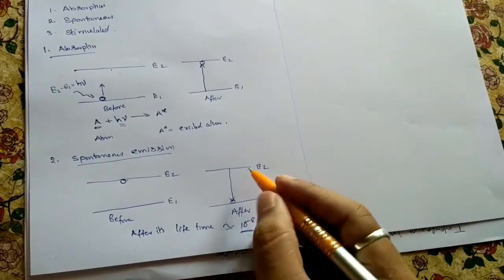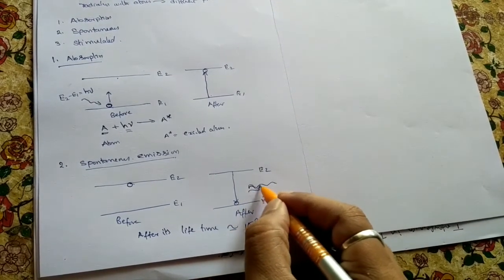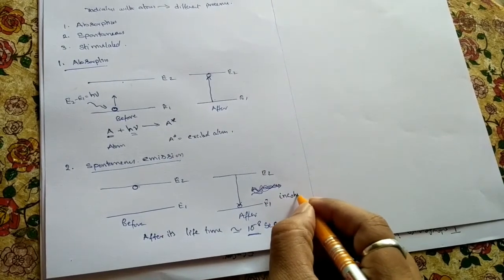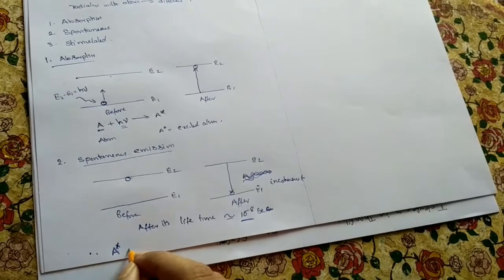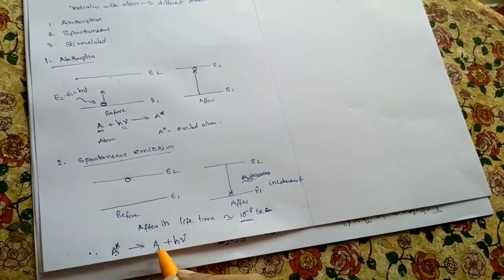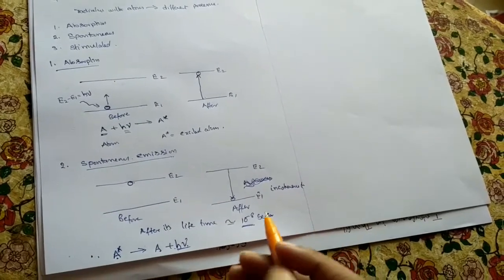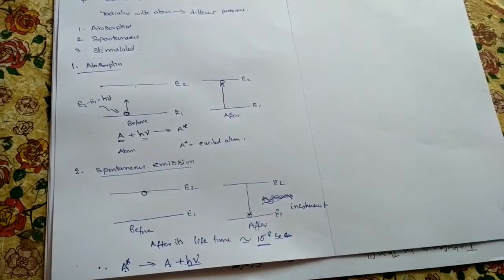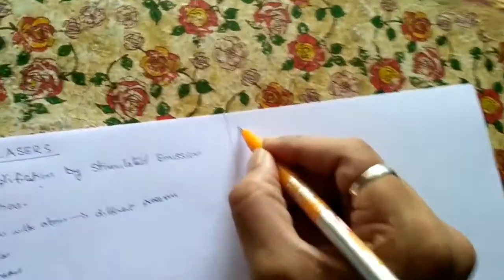In spontaneous emission, the atom releases some energy which is incoherent. We represent this as: A-star gives A plus h-nu, meaning the excited atom returns to an ordinary atom releasing energy as light or heat. The output beam is incoherent and the intensity is very very less.